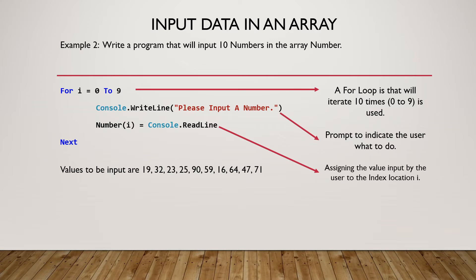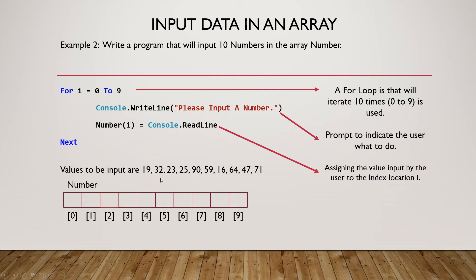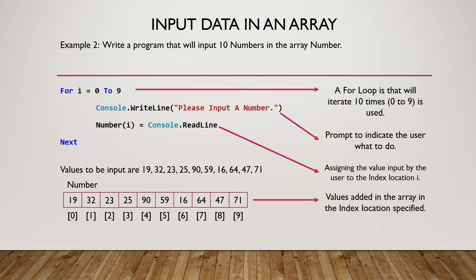Let us take examples of values to be input: 19, 32, 23, 25, 90, 59, 16, 64, 47, and 71. Each value is inserted into our array data structure. At the start, the value of i is 0, so 19 is stored in position 0. When the loop iterates, i becomes 1, so the next value is stored in location 1. This continues until all 10 numbers are input into their specified locations.